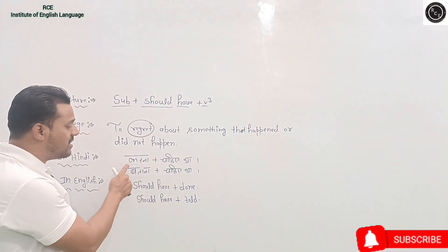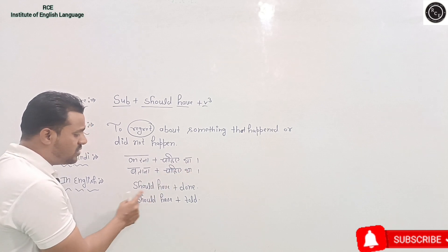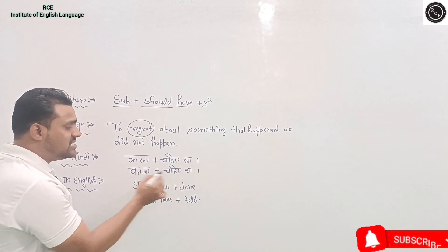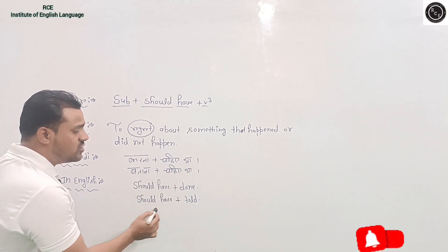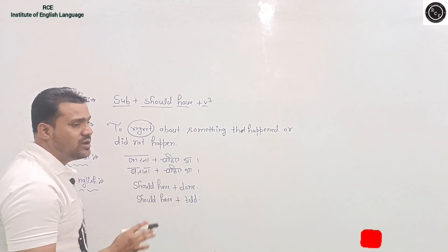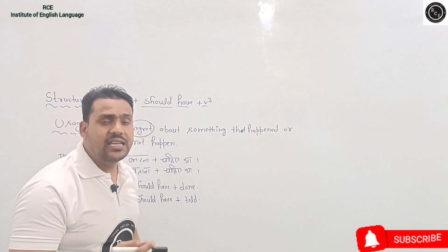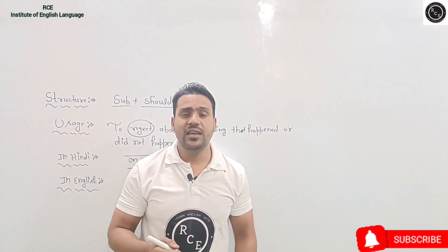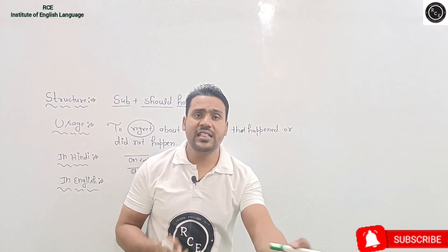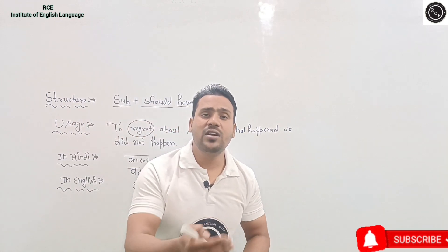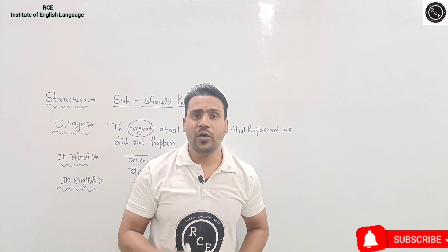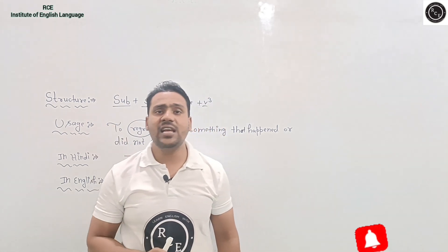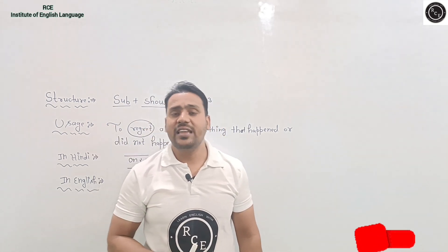As I said, 'karna' plus 'chahiye tha' becomes 'should have done.' Batana chahiye tha = should have told. Likhna chahiye tha = should have written. Khelna chahiye tha = should have played. Invite karna chahiye tha = should have invited.